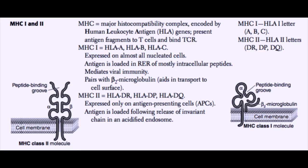There are two classes to know. Class 1 is HLA-A, HLA-B, and HLA-C — three types. It's expressed on almost all nucleated cells and not on red blood cells, since mature red blood cells have no nucleus. The antigen loaded into MHC class 1 is an endogenous antigen made inside the cell and loaded in the rough endoplasmic reticulum. Because it looks at proteins found inside the cell, MHC class 1 mediates viral immunity. The MHC class 1 chain pairs with beta-2 microglobulin, which aids in transport to the cell surface and MHC class 1 stability.